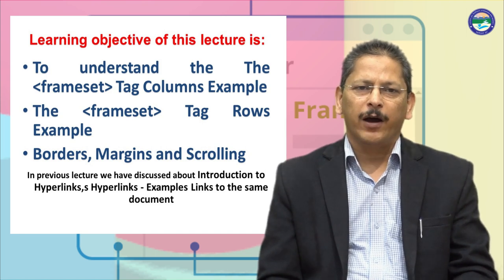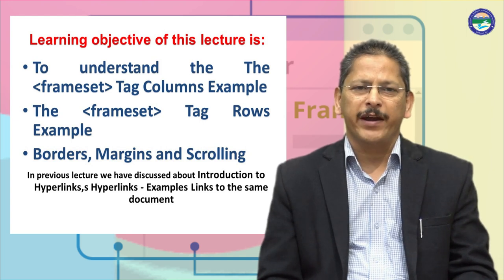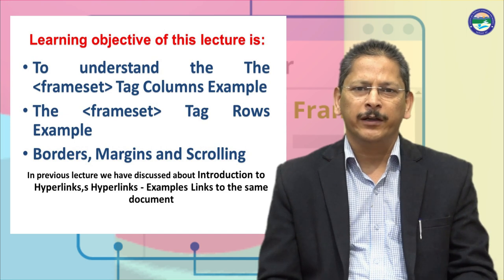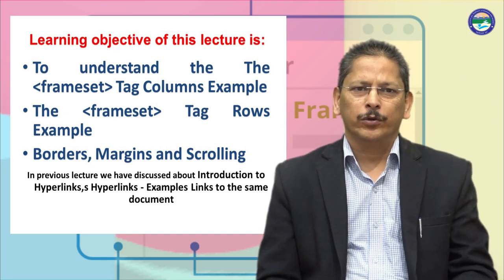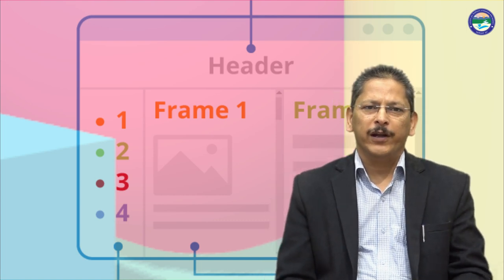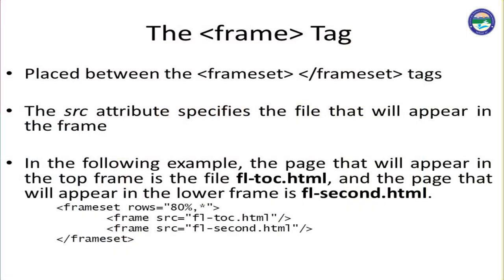We have covered how to create a frame, how to write a program to divide the screen into different frames — different rows as well as different columns. First of all, the frame tag is placed between the frameset. You can see in this example we have a frameset column, a frameset row, and in between we have frame elements: frame 1, frame 2, and frame 3.